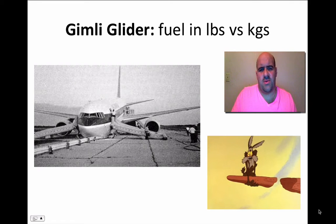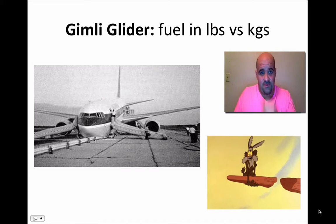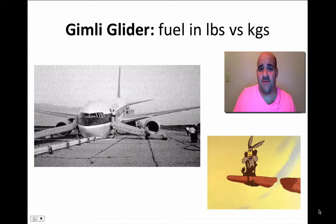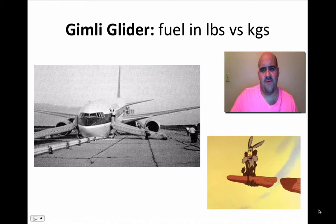The Gimli Glider, 1983, Air Canada — there was a malfunction with the computer system, so when the plane had a layover they decided to fill up the fuel manually. They mixed up kilograms and pounds. A kilogram is 2.2 pounds, so they didn't put enough fuel in. About halfway through the journey, at 40,000 feet in the air, they had no gas. The pilot used quick thinking and was able to land the plane at a nearby airstrip. He glided the plane in and no one got hurt until exiting the plane going down the emergency safety chute.